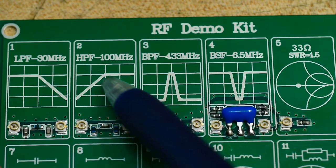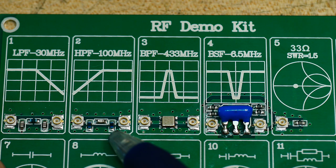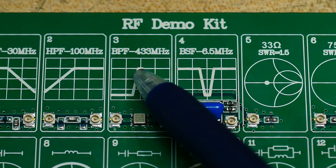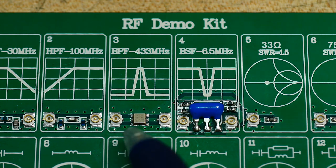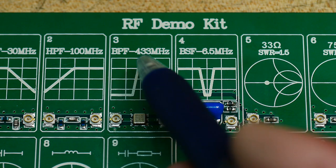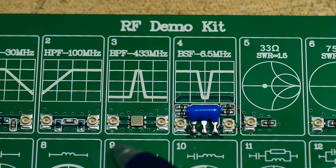This one is a high-pass filter, 100 megahertz. And here's its circuit. There's a bandpass filter, which is a funny little package. I don't know where they got this part, but it's a 433 megahertz bandpass filter. And it's in a little package. So got this somewhere.